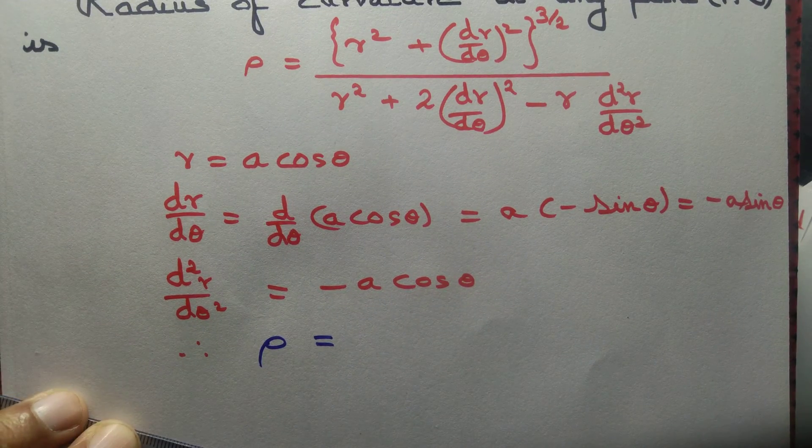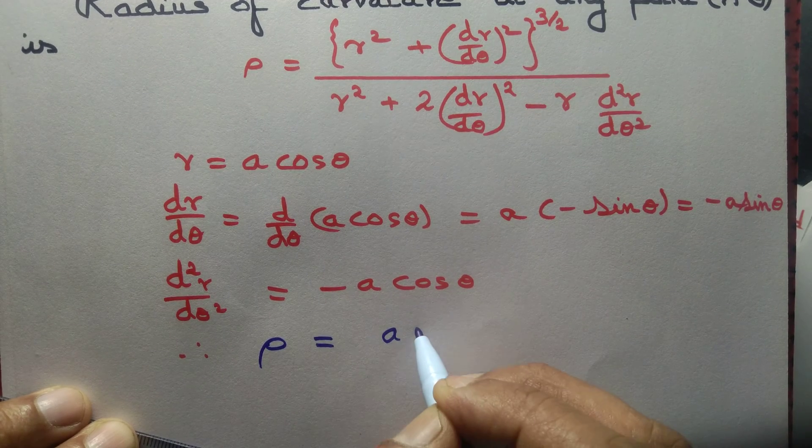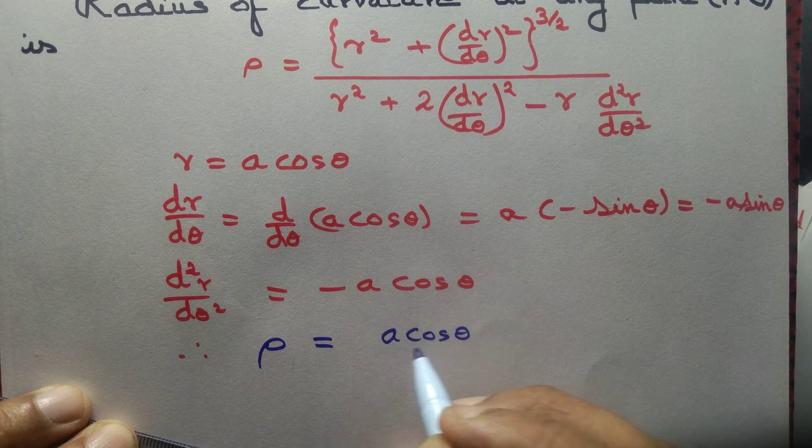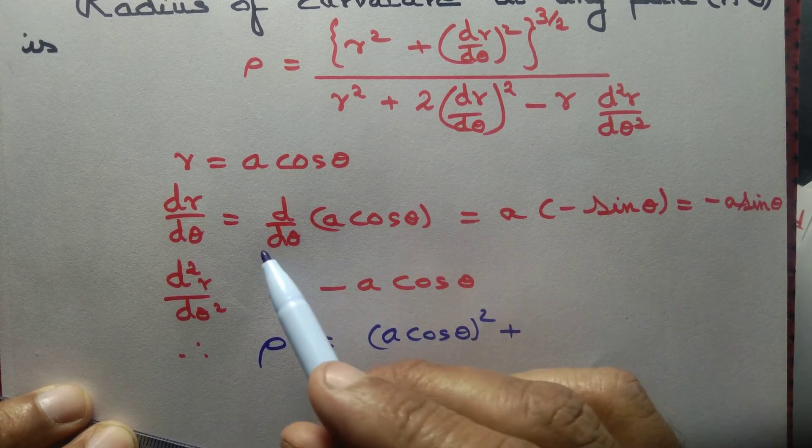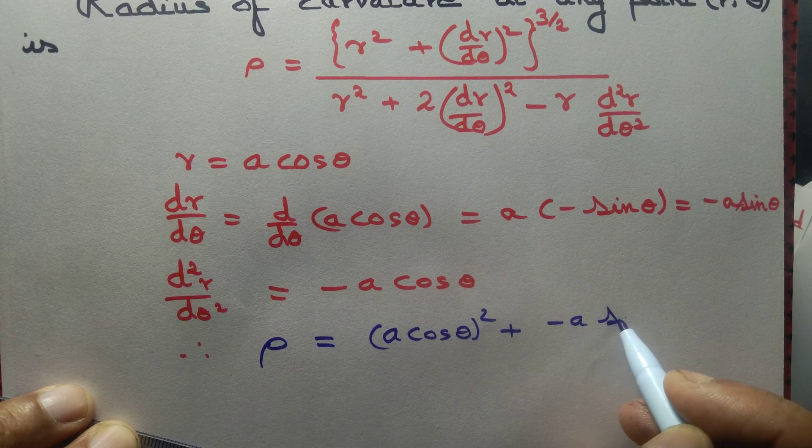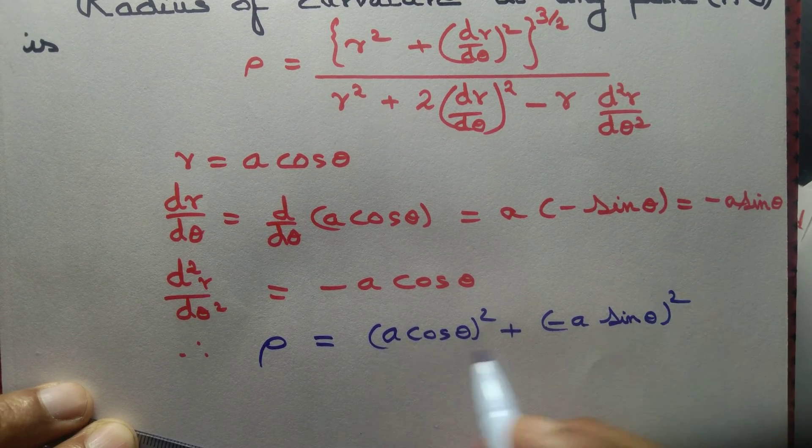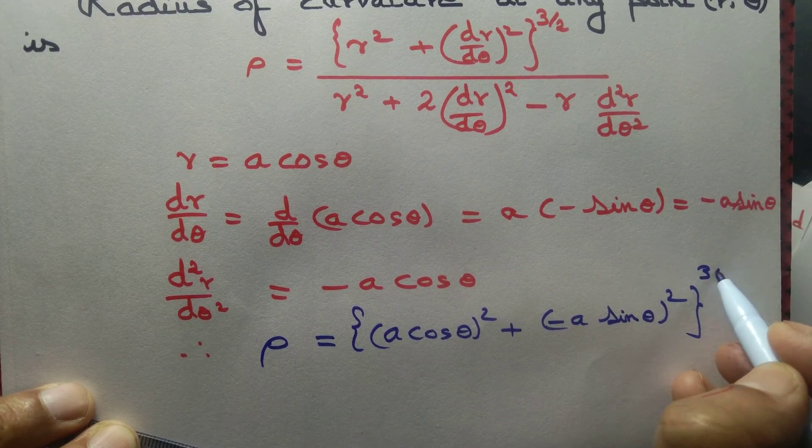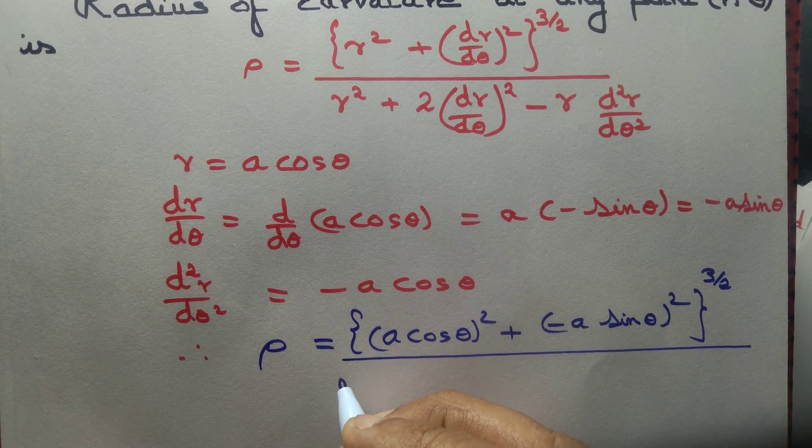Now rho denotes radius of curvature, equal to r square. r is a cos theta, so a cos theta whole thing square, plus dr by d theta whole thing square, minus a sine theta to the power 3/2, divided by r square. r is a cos theta whole thing square.